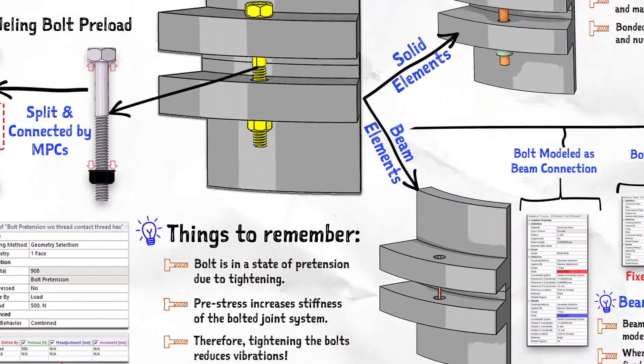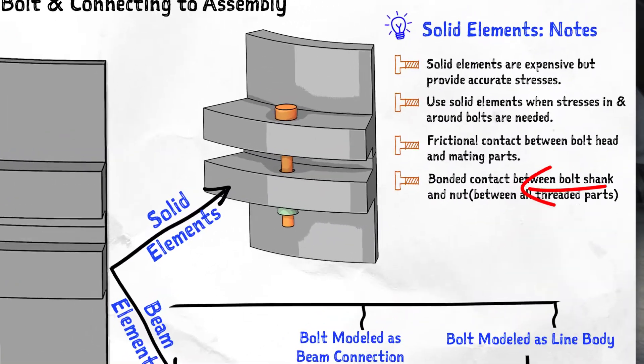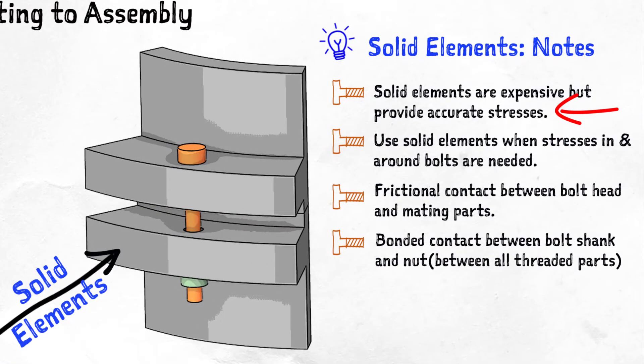Bolts can be modeled using either solid or beam elements and the bolt pre-load can be defined on both. Solid elements are computationally more expensive, but they provide an accurate representation of stresses developed in and around the bolt and allow for modeling of more complex interactions between bolt and mating parts, such as with frictional contact.